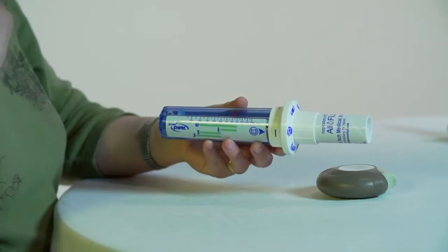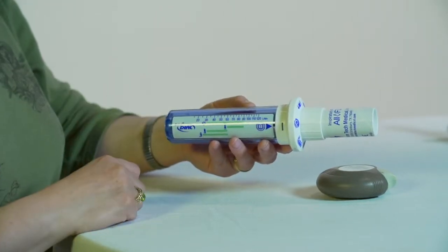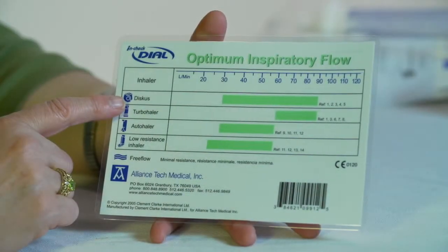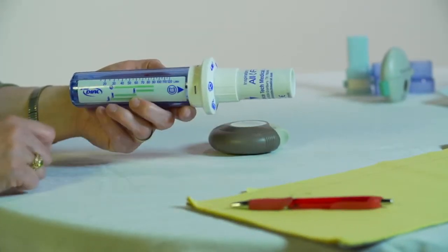The range for the different devices is conveniently along the side of the tube, or you can check the card that comes with the device. Record that rate. Repeat all of the steps twice more to ensure that these results can be duplicated.